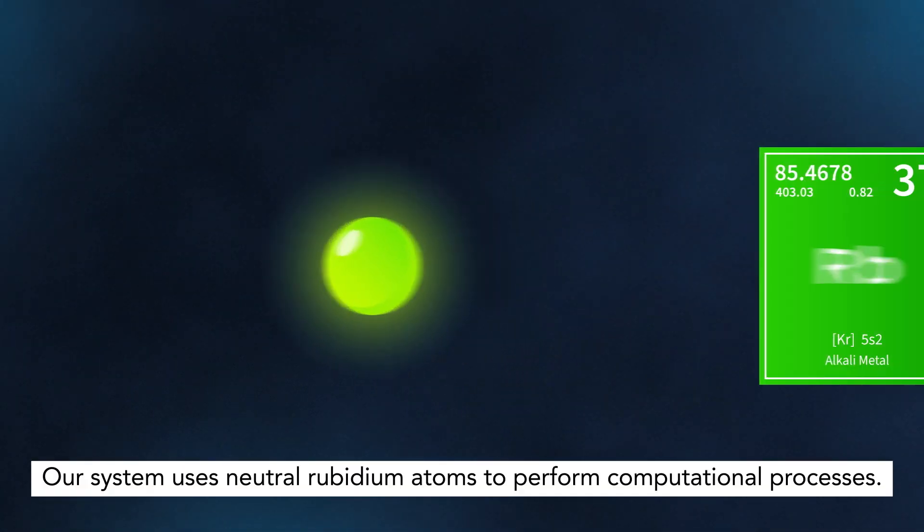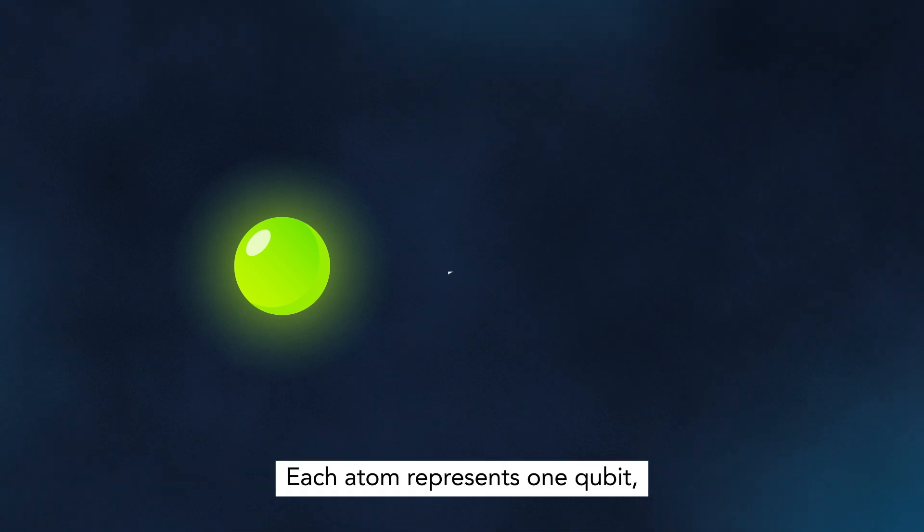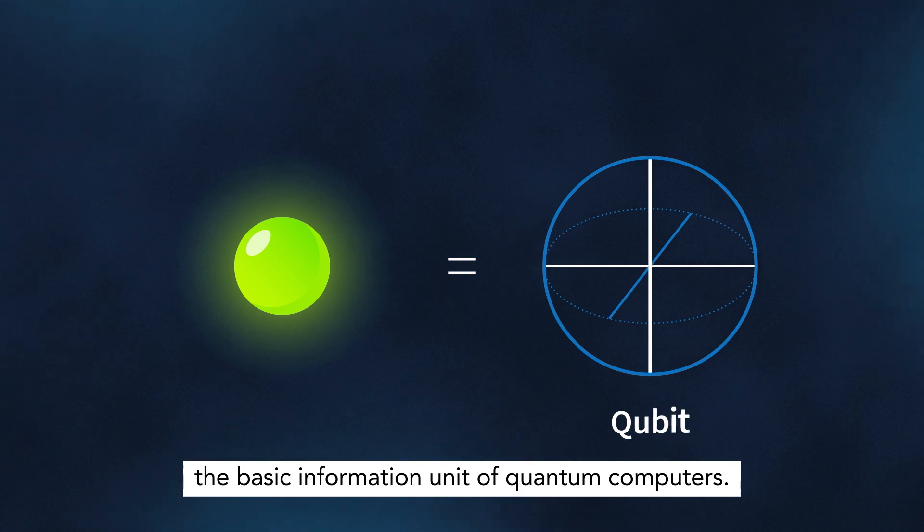Our system uses neutral rubidium atoms to perform computational processes. Each atom represents one qubit, the basic information unit of quantum computers.